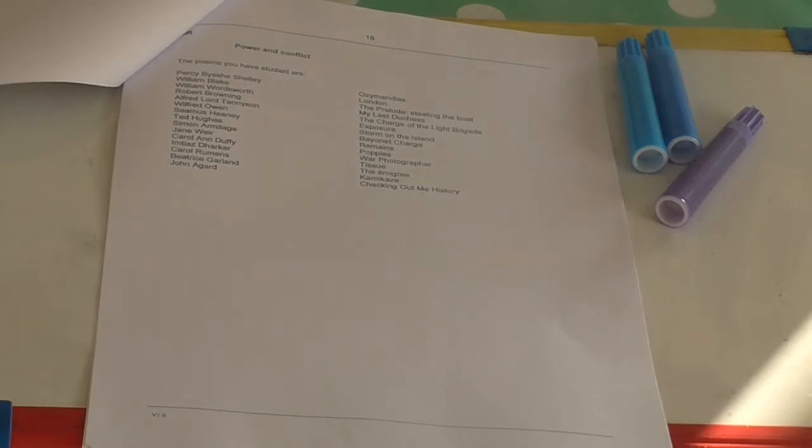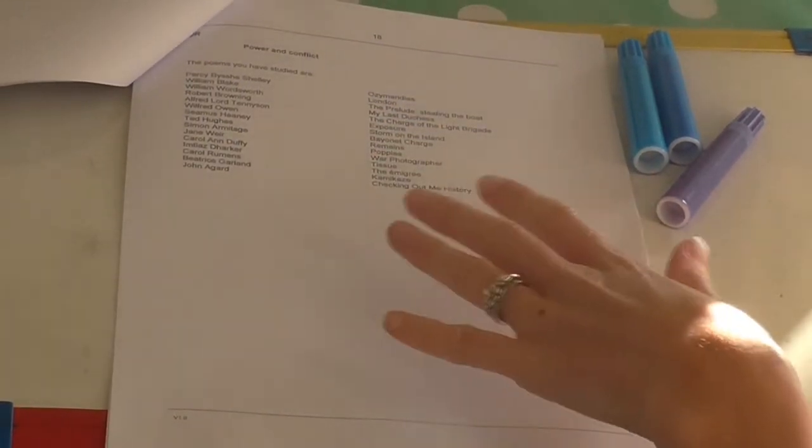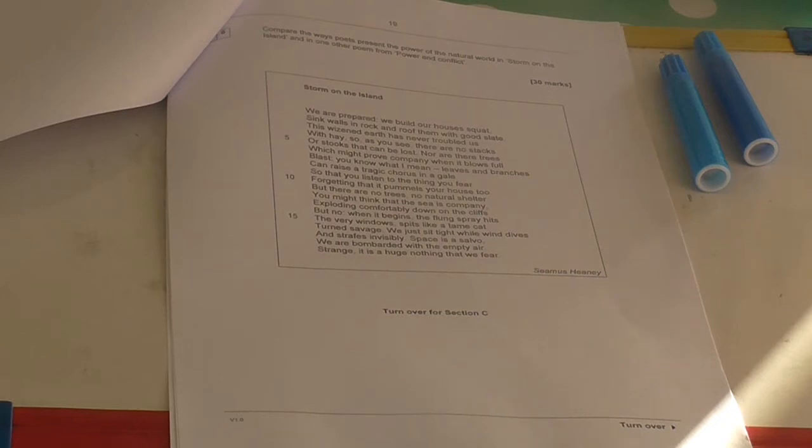Once you're ready to go on to section B, Power and Conflict, these are the poems that you have been studying from the anthology. Before you get to the actual question, what is really helpful is that there are a list of the poems that you have studied here. If you're struggling to find an easy connection or comparison between the poems that you're given and the ones that you have to do from memory, it's worth looking down the list and deciding from there. You are then given a comparison question where you're given a particular poem, in this case Storm on the Island, and then you are given a focus, in this case The Power of the Natural World. It's a really simple question, once you know the method, once you know how to answer it and how to plan your answer.